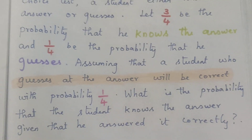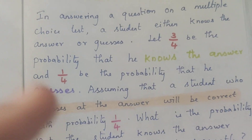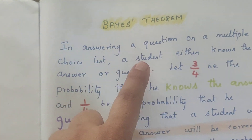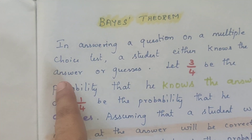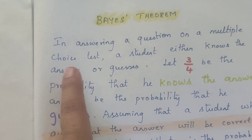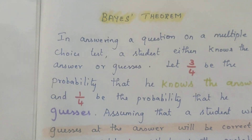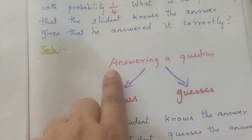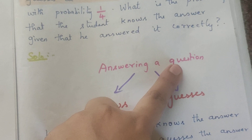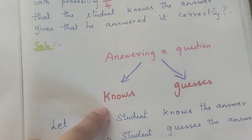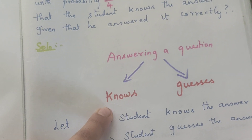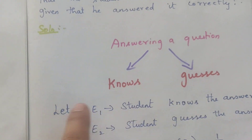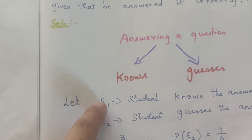In this situation, there is a multiple-choice test where the student either knows the answer or guesses the answer. So, the answer is either you know the answer or you guess the answer. This gives us a 2-set split.